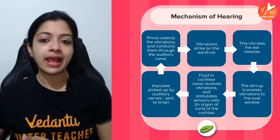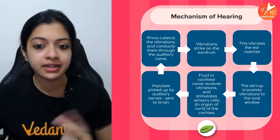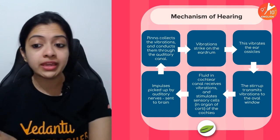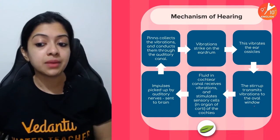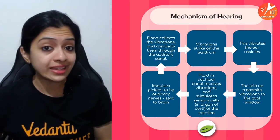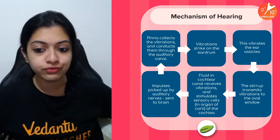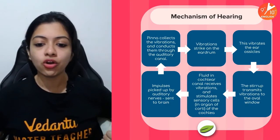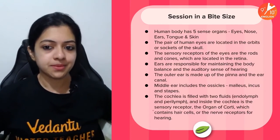Here is a flowchart of the mechanism of hearing: starting with the pinna, vibrations strike the eardrum, which vibrates the ear ossicles, transmitting the vibrations to the oval window. The fluid in the cochlear canal receives this, stimulates the sensory cells in the organ of Corti, and these signals are picked up by the auditory nerves and sent to the brain.